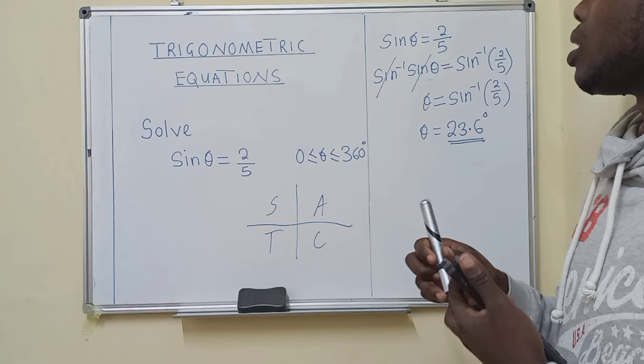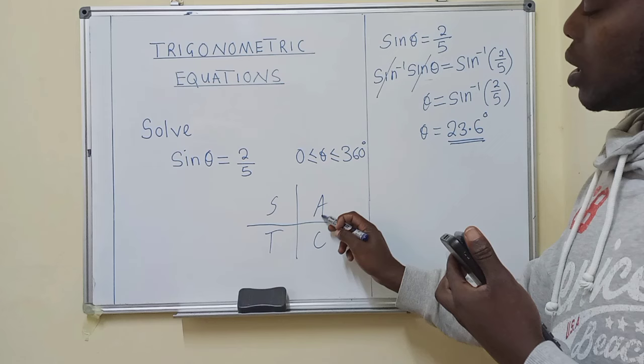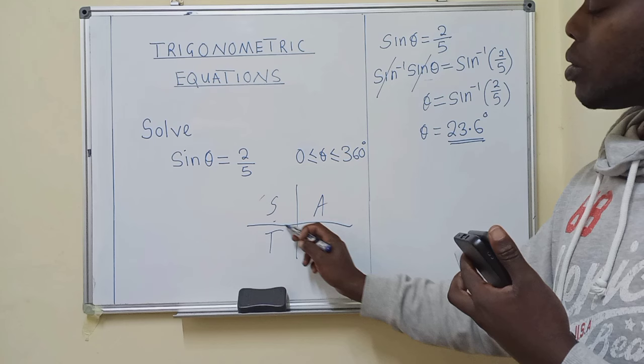It can work for you. So meaning, all of them in quadrant one are positive. In quadrant two, it's only sine which is positive. Quadrant three, it's done. Quadrant four, it's cos.